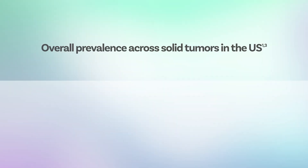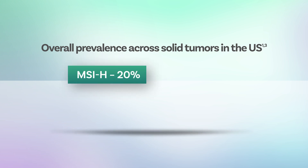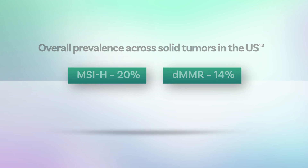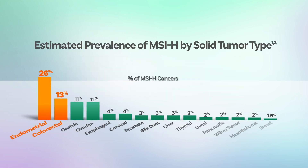In the United States, the overall prevalence of MSI-high and dMMR across different solid tumors has been estimated at approximately 20 and 14 percent respectively, with the highest prevalence observed in endometrial and colorectal cancers.